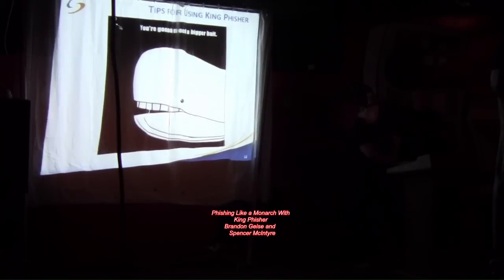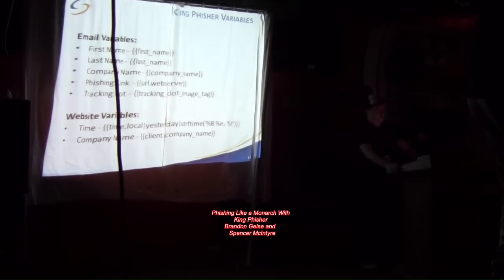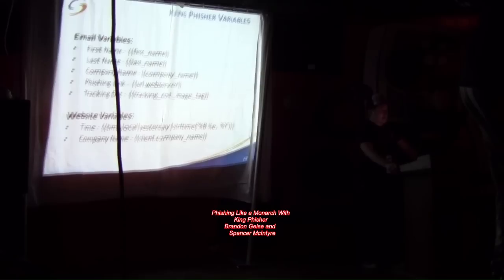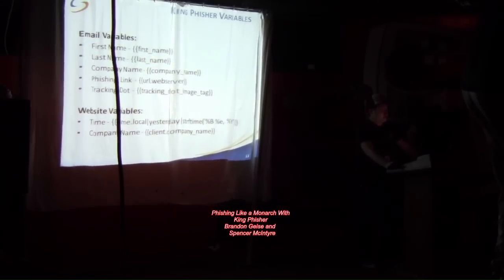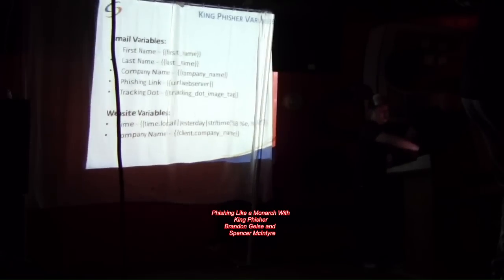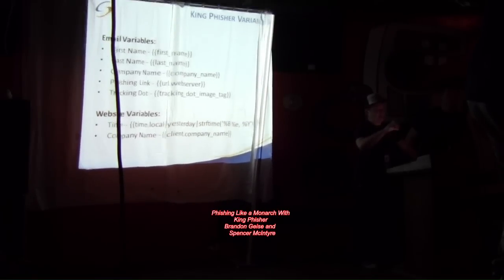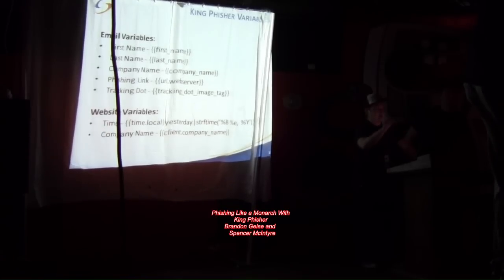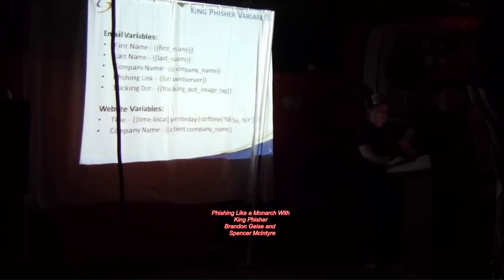With that, I'll pass it over to Brandan, who's going to talk about tips for using Kingfisher. One of the things that makes Kingfisher different is it has something built in we like to call variables. There are different variables you can use within the email you're sending and within the phishing website. You can make a template that has the person's first name and last name. You can customize it so that when you have the target list in CSV format — first name, last name, email address — it'll push that first and last name into the actual email being sent.